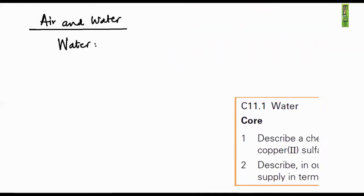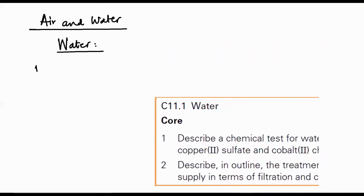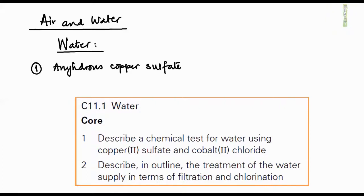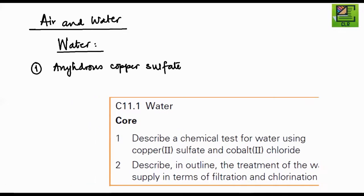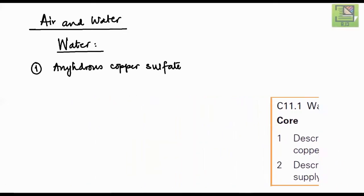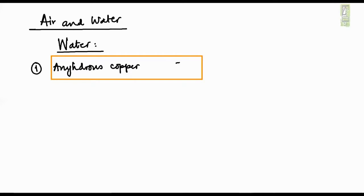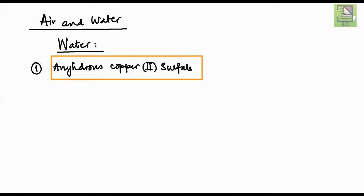First, we are going to see different tests for detecting the presence of water. The first test is the use of anhydrous copper sulfate. The word 'anhydrous' means it does not contain any water — 'an' means non, and 'hydra' means water. Anhydrous copper sulfate is white in color, or we can say anhydrous copper(II) sulfate, as copper is a transition element.